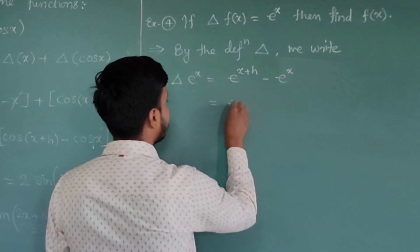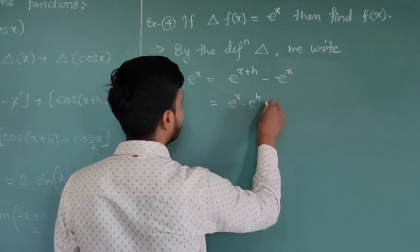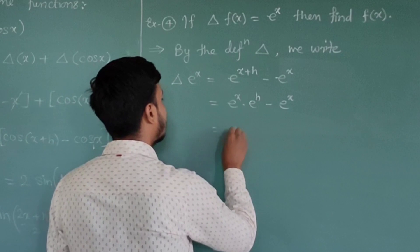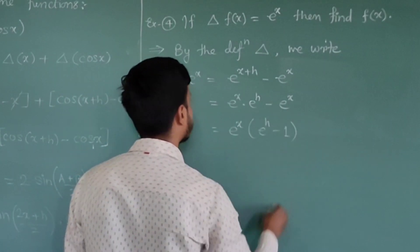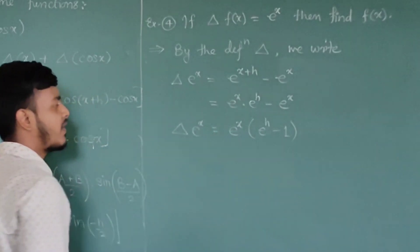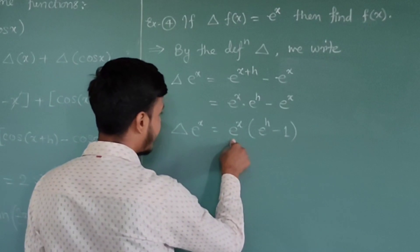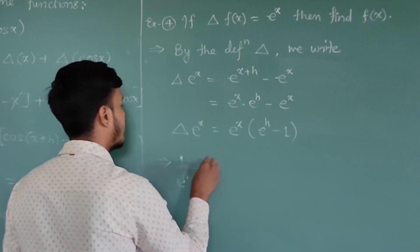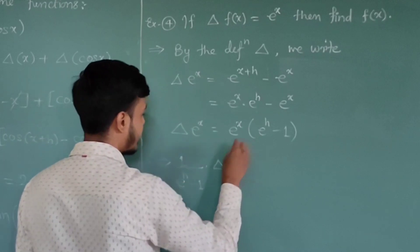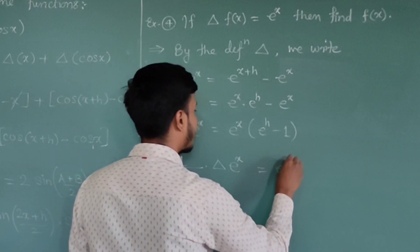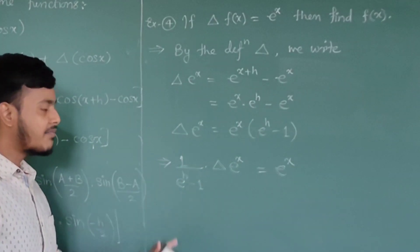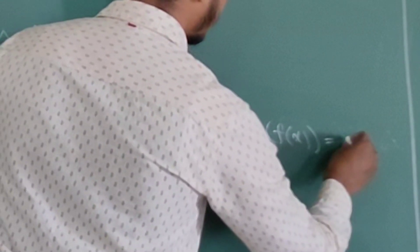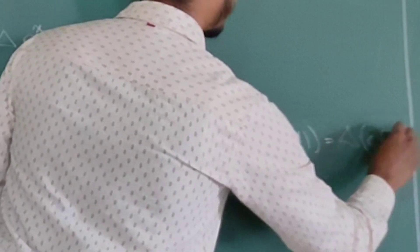Apply the law of indices to write e^(x+h) as eˣ · eʰ. Taking eˣ common gives Δ(eˣ) = eˣ(eʰ − 1). So eˣ = (1/(eʰ − 1)) · Δ(eˣ). Since 1/(eʰ − 1) is a constant, using the property Δ(c·f(x)) = c·Δ(f(x)), this becomes Δ(eˣ/(eʰ − 1)) = eˣ.